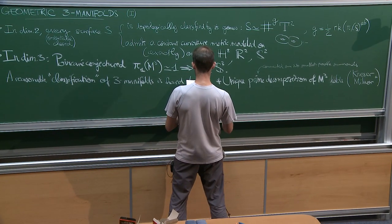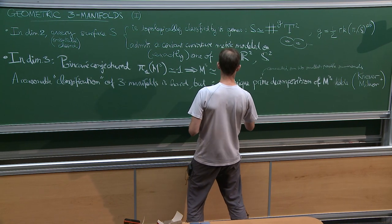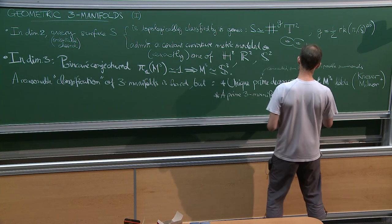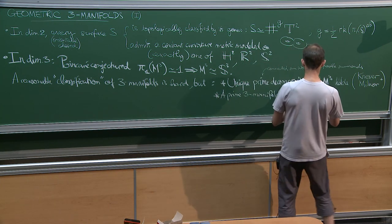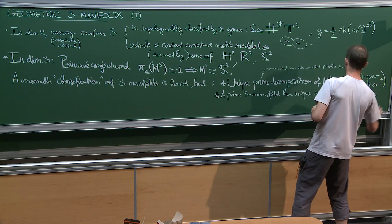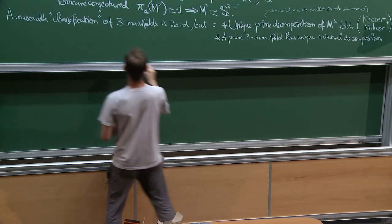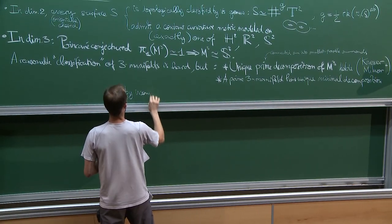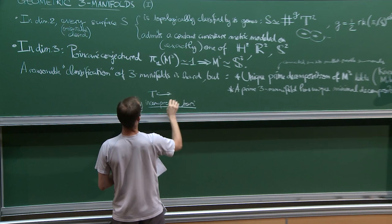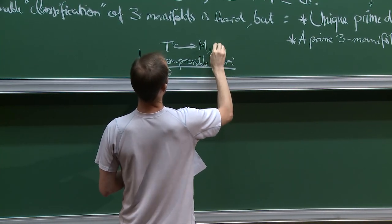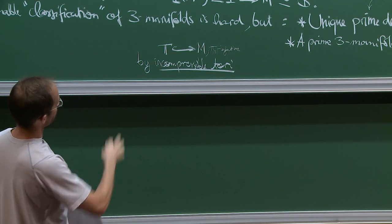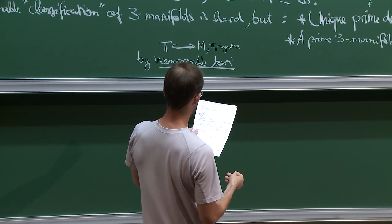So, in a sense, it's enough to understand prime 3-manifolds. And about prime manifolds, here's what we can say. Let's say a prime 3-manifold has a unique, so that's isotopically unique, minimal decomposition by incompressible tori. So, those are tori T2 that find themselves injected in them in a way that's also injected at the pi1 level.